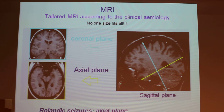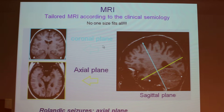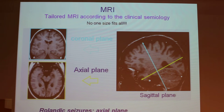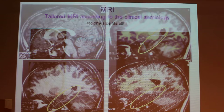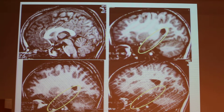For the MRI, you have to perform a tailored MRI according to the clinical semiology — no one-size-fits-all. You have to perform a 3D T1 in coronal and axial planes. If the seizures are rolandic motor seizures, you perform an axial plane. If it is a temporal seizure, you perform a coronal plane to see the pole and the hippocampus. You have to perform both coronal and axial planes for the hippocampus.